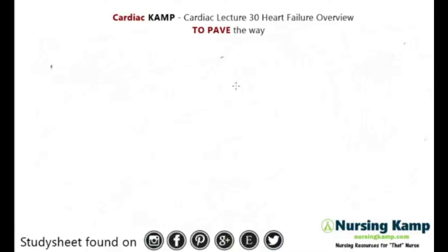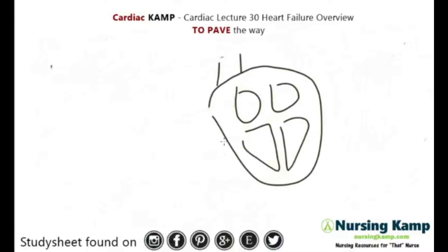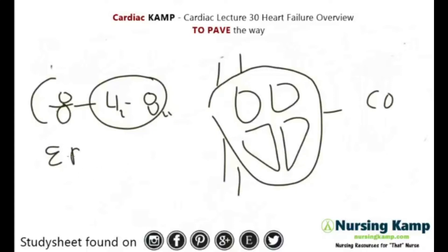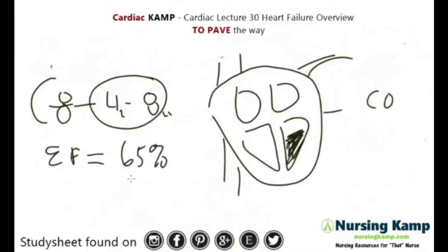Let's talk about the heart. The heart is structural — it's a big muscle. When it's functioning fine, we have good cardiac output. Cardiac output is four to eight liters per minute. You also have an ejection fraction — that's the volume of blood ejected out of the heart. That ejection fraction needs to be greater than 65%. If it is less than 65%, the patient will become symptomatic.